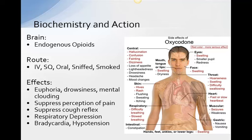Heroin produces euphoria, analgesic effects, drowsiness, detachment from the environment, and relaxation. You might notice constricted pupils, decreased respiratory rate — so ABCs are critical — slurred speech, impaired judgment, and decreased sexual drive. Heroin is one of the most widely abused opiates.